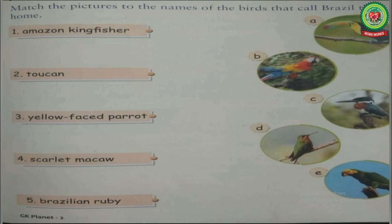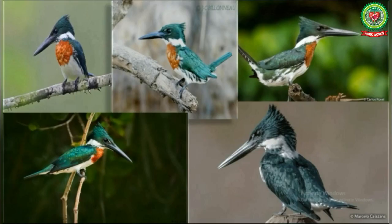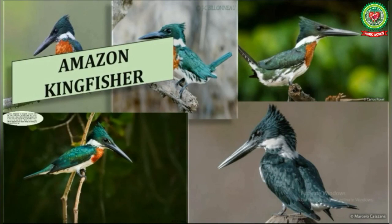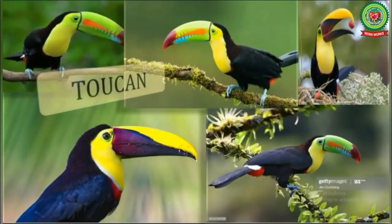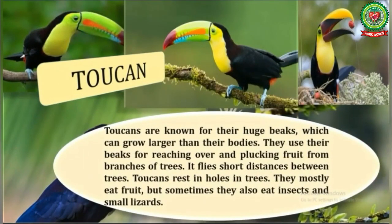Number one is Amazon Kingfisher. The Amazon Kingfisher is a brightly colored bird that possesses dark blue or green wings. It is green above with a white collar around the neck. It has a short tail and long beak which helps it to catch fish and insects. Its feet are strong, which supports it while sitting or resting on branches of the tree.